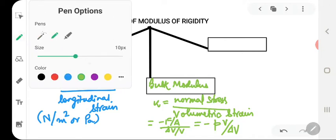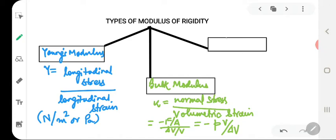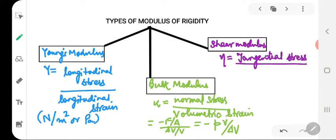Coming to the third group that is shear modulus or what is called the modulus of rigidity. Now it is given by Eta and this is equal to tangential stress divided by shear strain. So we can write it to be equal to F by A gamma.